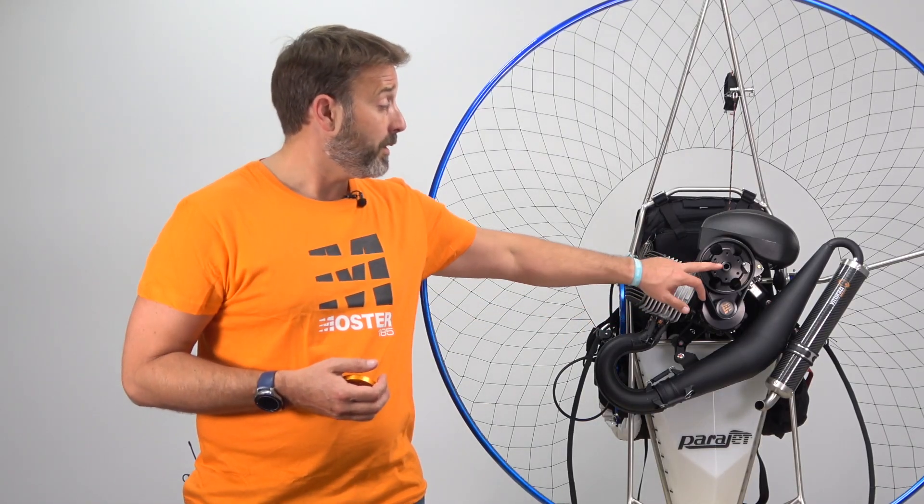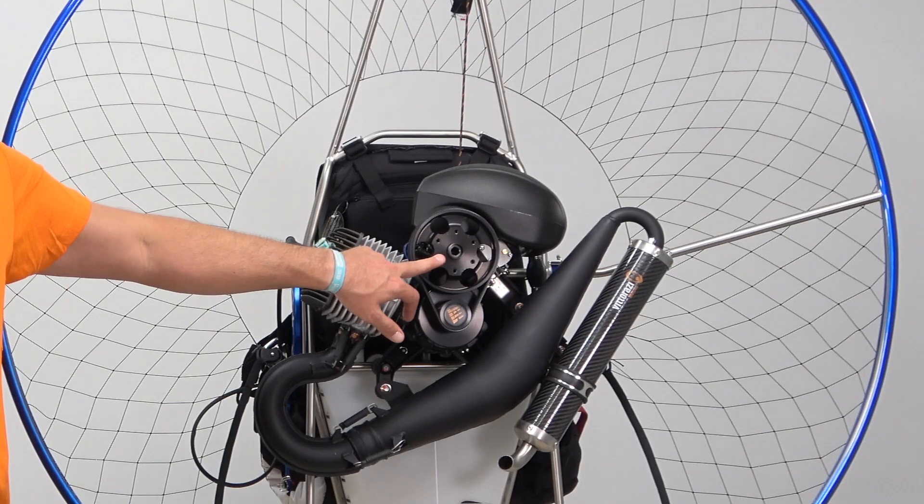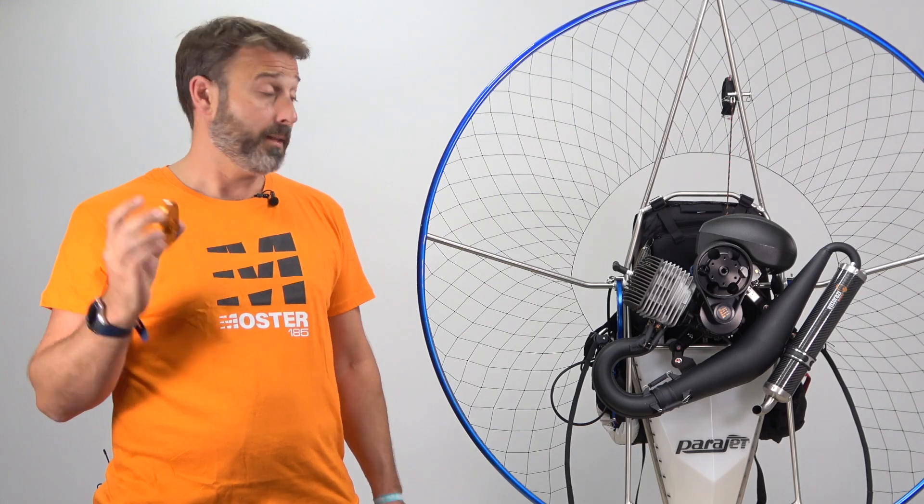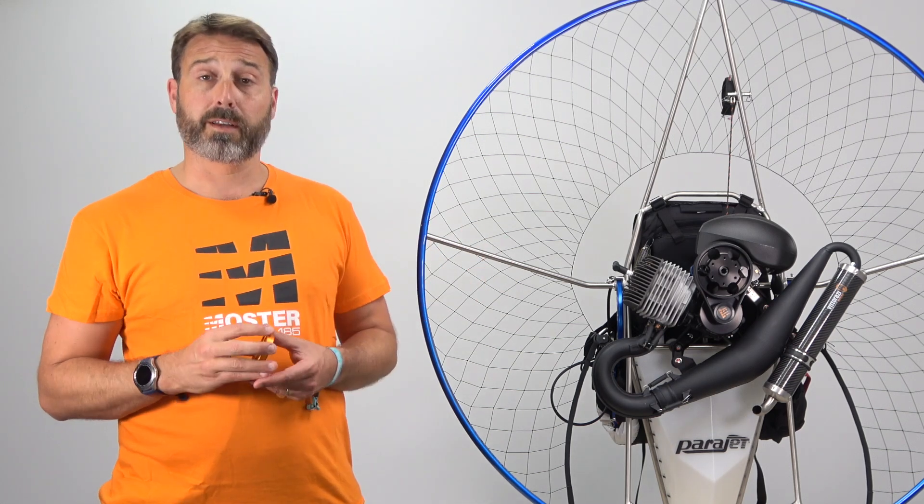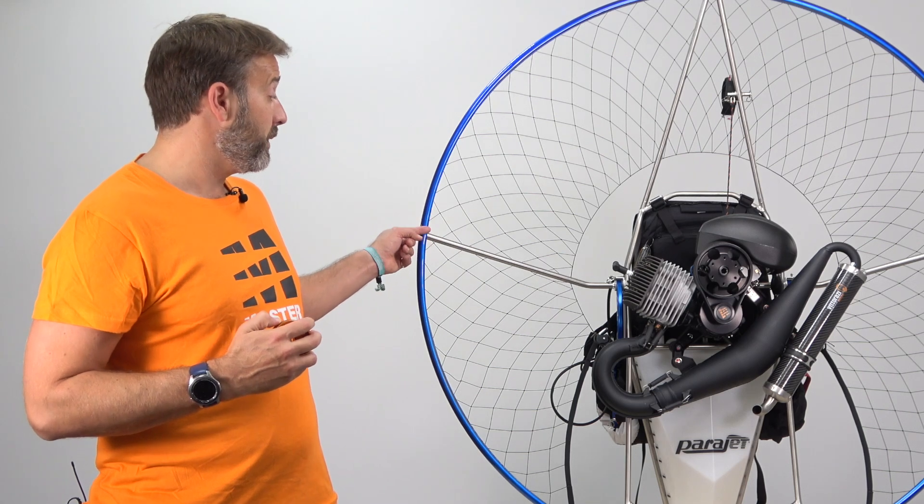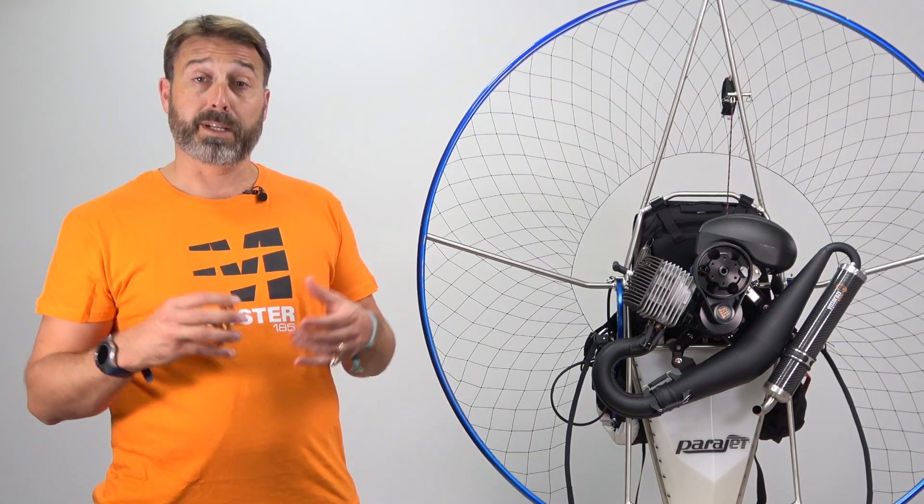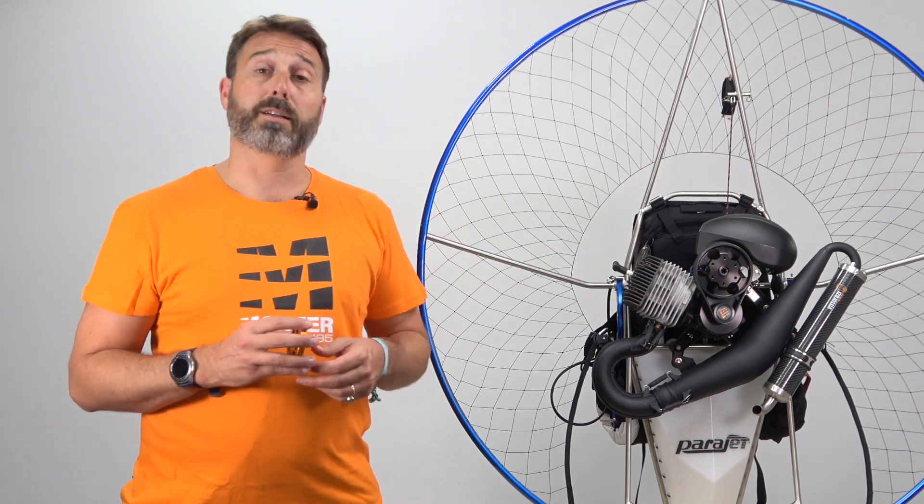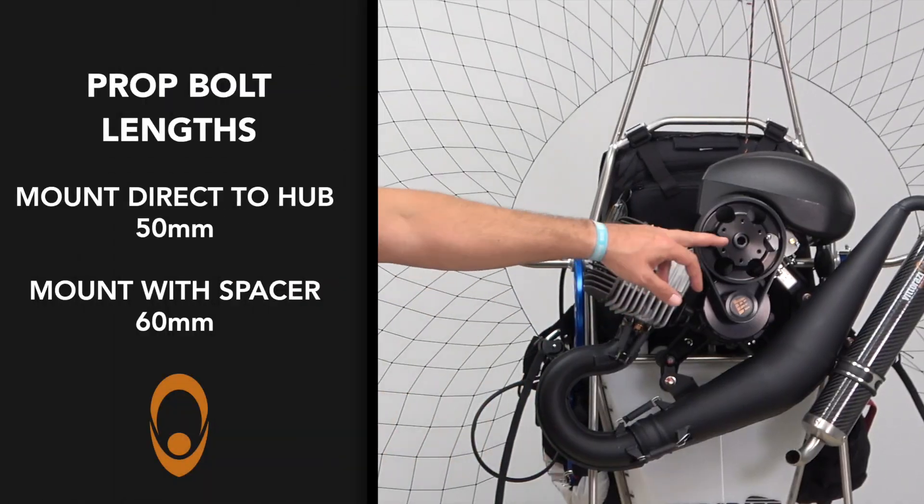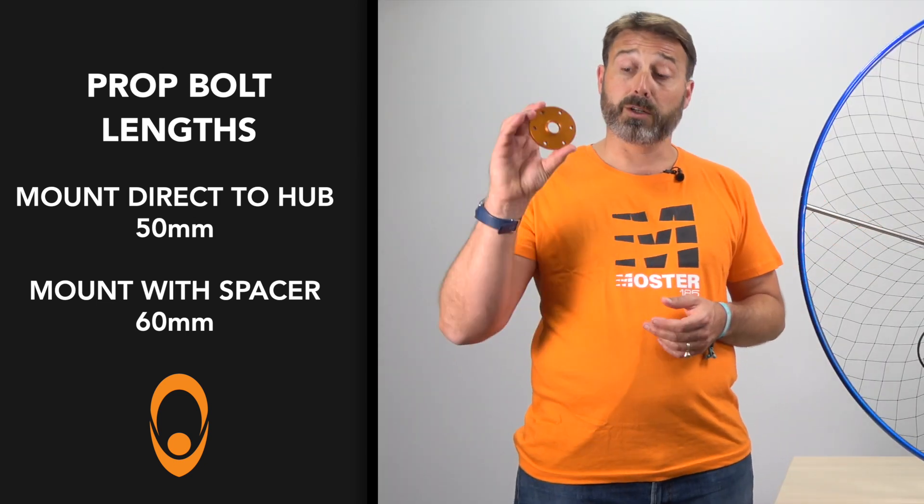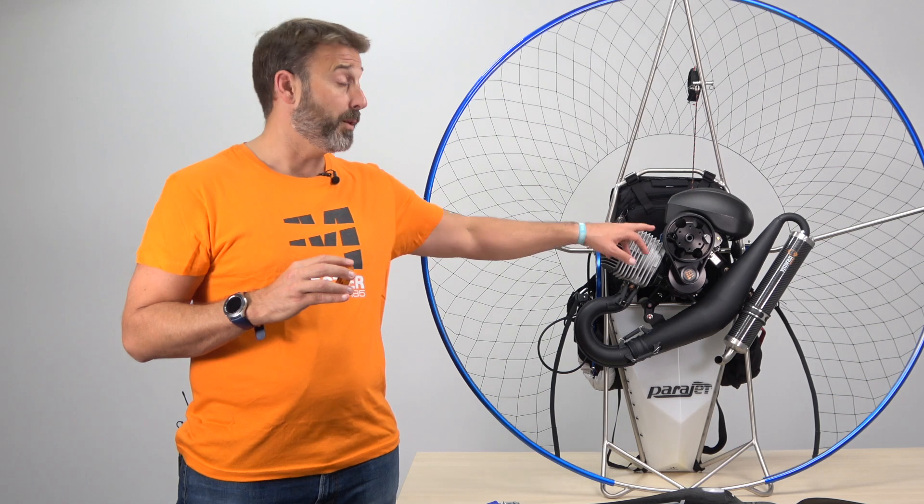In many cases you will mount your propeller directly to the pulley. However, in some situations you may choose to utilise the propeller spacer. For example, with the Maverick we recommend you utilise the propeller spacer to ensure the maximum distance between the propeller and cage. Please note that when mounting the propeller directly to the hub, the bolts will be shorter, and when utilising the spacer, the bolts will be longer.